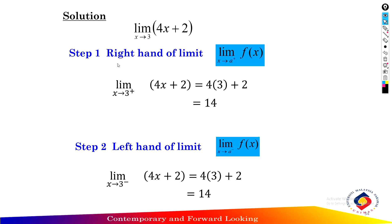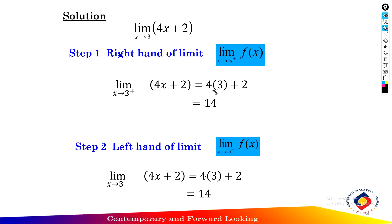Find the right-hand limit of the function: the limit as x approaches 3 from the right of f(x). This positive sign means the limit from the right. Write down the limit as x approaches 3 of 4x plus 2, and substitute 3 into the function: 4 times 3 plus 2. The right-hand limit equals 14.